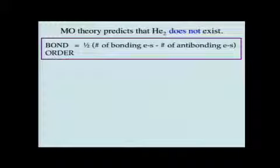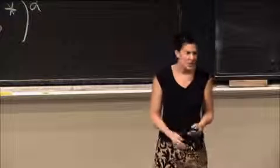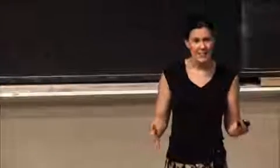There's actually a way that we can make predictions here. Molecular orbital theory predicts that He2 does not exist because it's not stabilized in terms of forming the molecule.